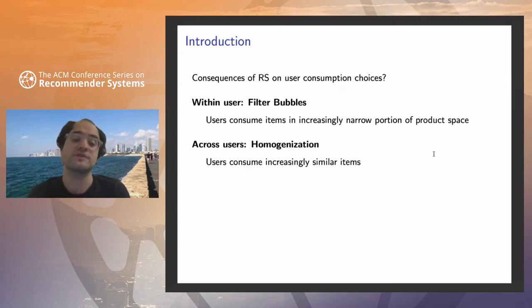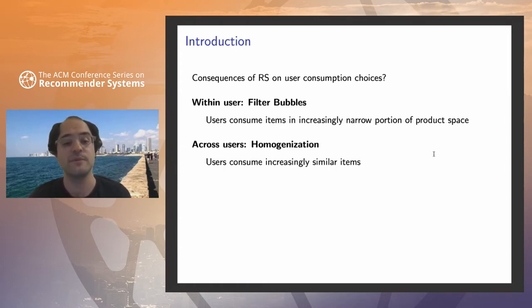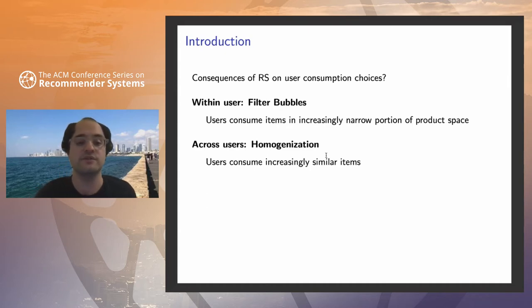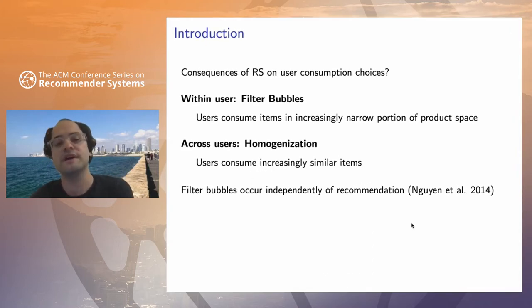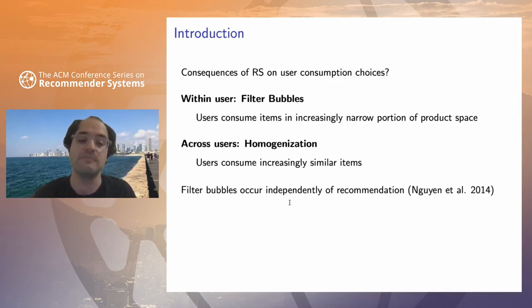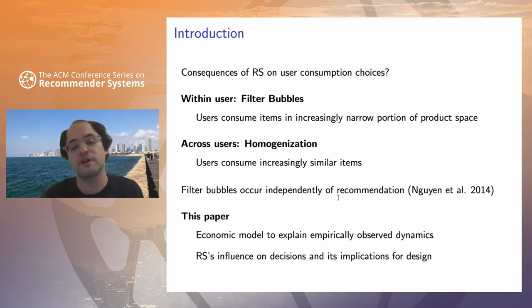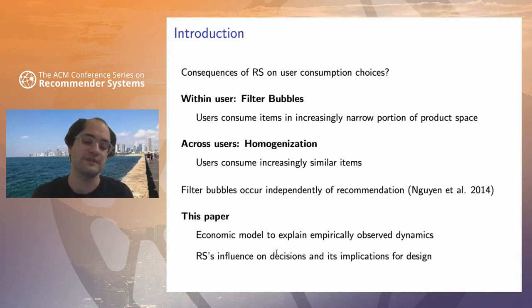Broadly speaking, the literature is focused on two issues. The first is whether recommender systems lead users into so-called filter bubbles — the idea that users consume items in increasingly narrow portions of the product space over time as a result of recommendation. The second issue is homogenization — the idea that users consume increasingly similar items as each other as a result of recommendation. We were motivated by a paper that looked at the MovieLens context and investigated empirically whether filter bubble effects play out in reality. More or less, they found that filter bubble effects seem to occur independently of recommendation, and if anything, recommender systems seem to alleviate such an effect.